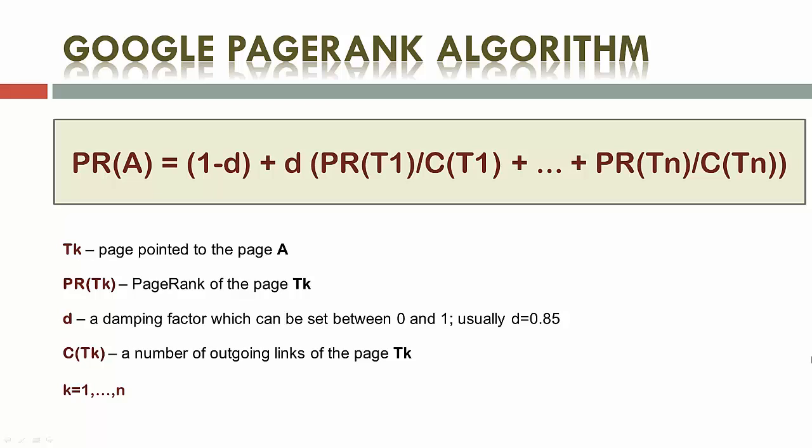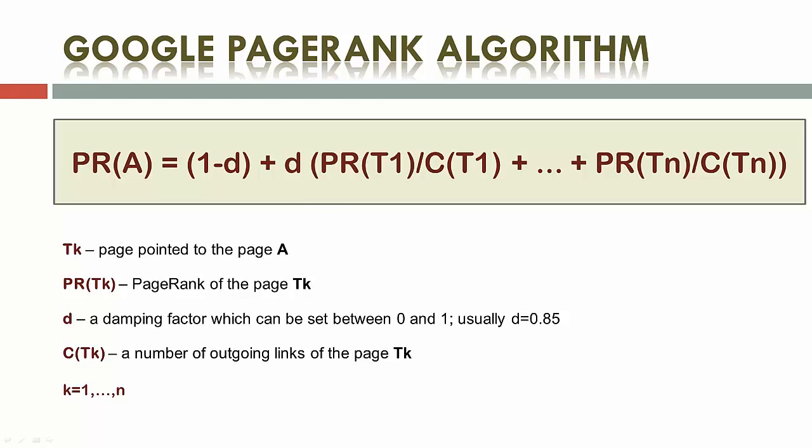Usually d equals 0.85. C(Tk) is the number of outgoing links of the page Tk. And finally, k can take the value from 1 to n.